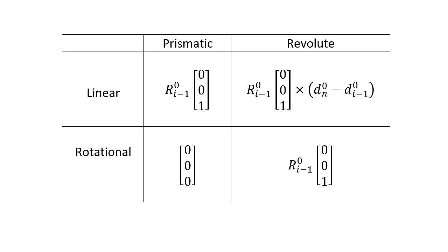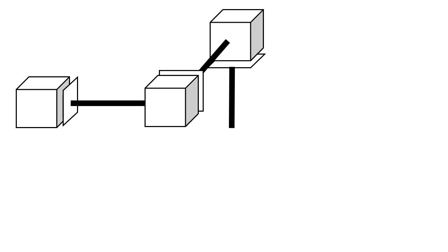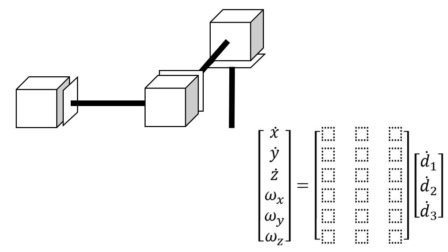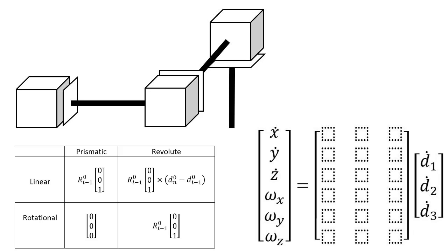For the first example, let's suppose that the manipulator has all prismatic joints. Our Jacobian matrix will have three d's in place of the q's, because we only have three prismatic joints. To find what goes in each place of the Jacobian matrix, we use the table. We'll start with the first column, which is for the first joint. That joint is prismatic, so i equals one, and we fill in the first column accordingly.